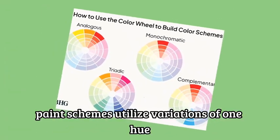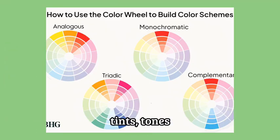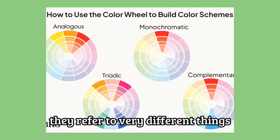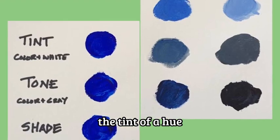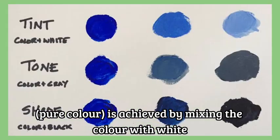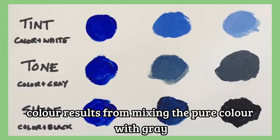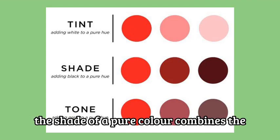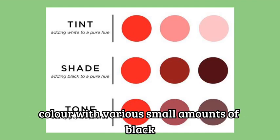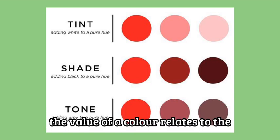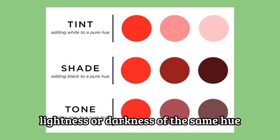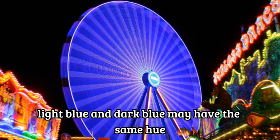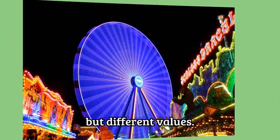Monochromatic paint schemes utilize variations of one hue. Tints, tones and shades tend to be used interchangeably, but in reality they refer to very different things. The tint of a hue — pure color — is achieved by mixing the color with white. The tone of a color results from mixing the pure color with gray; the intensity of a color can be toned down by adding gray. The shade of a pure color combines the color with various small amounts of black. The value of a color relates to the lightness or darkness of the same hue. Light blue and dark blue may have the same hue but different values.